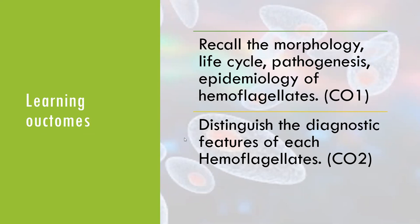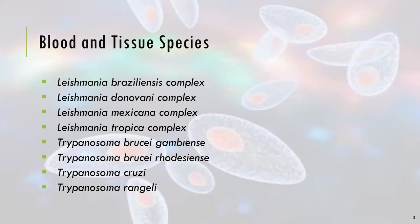epidemiology of hemoflagellates and distinguish the diagnostic features of each. Hemoflagellates is a protozoan parasite considered as blood and tissue protozoans. These species include Leishmania brasiliensis complex, Leishmania donovani complex, Leishmania mexicana complex, Leishmania tropica complex, Trypanosoma brucei gambiense, Trypanosoma brucei rhodesiense, Trypanosoma cruzi, and Trypanosoma rangeli. These blood and tissue protozoans are divided into two genera: Leishmania and Trypanosoma.